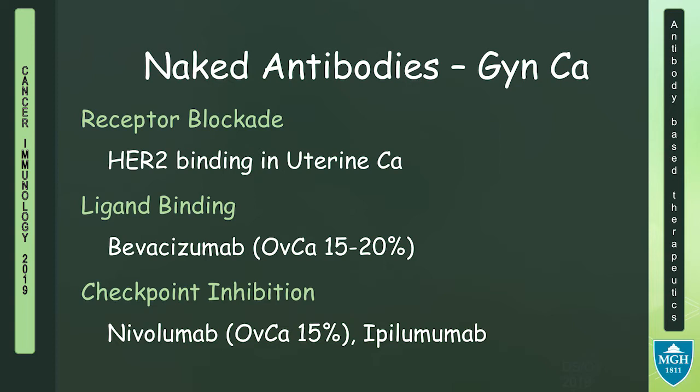These are some examples of naked antibodies we've used with varying degrees of success in gynecologic cancers. We've looked at HER2-binding antibodies in uterine cancer; unfortunately, our results have not been the same as HER2 targeting in breast cancer. This is a reminder that we still have to go back and look at the tumor histology and the biology itself. There is a movement now to look at tumor-agnostic markers, but the HER2 story is a cautionary tale — tumor histology still matters. There is bevacizumab, one of our bulwark antibodies in ovarian and uterine cancer, and also checkpoint blockade.